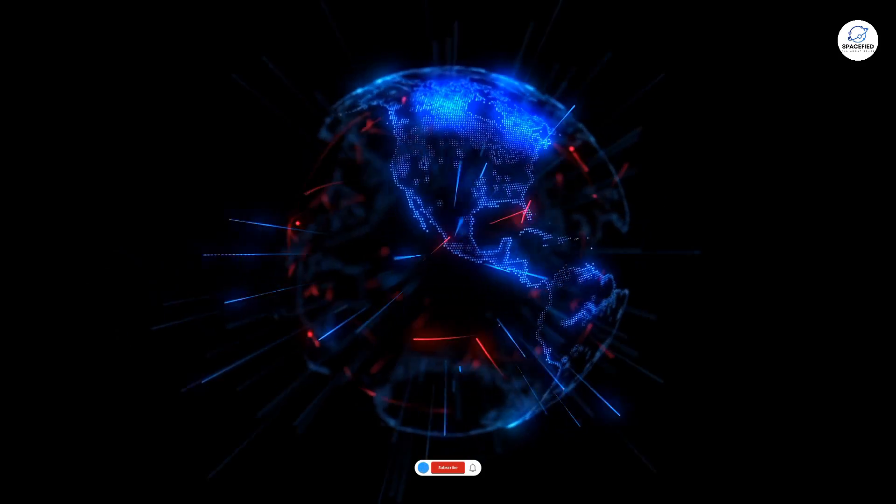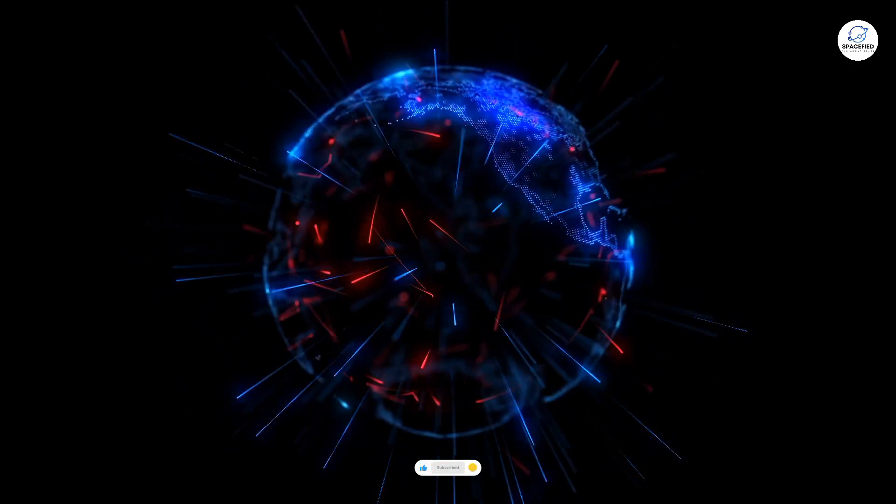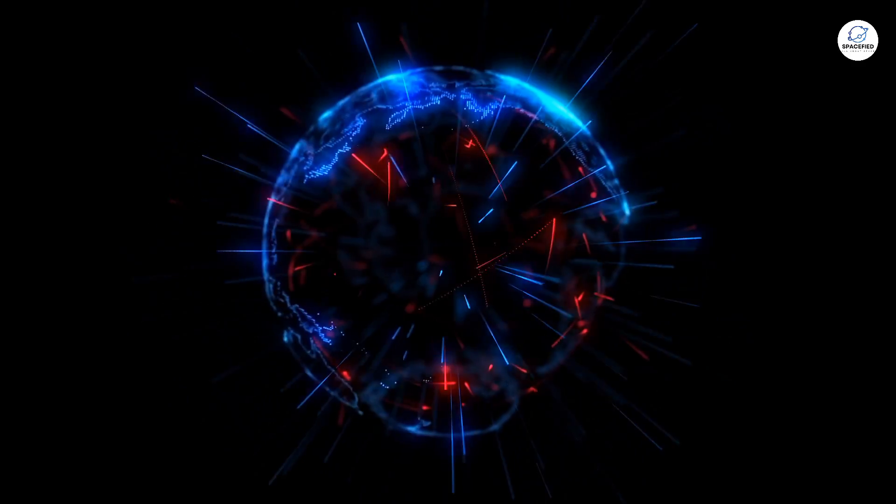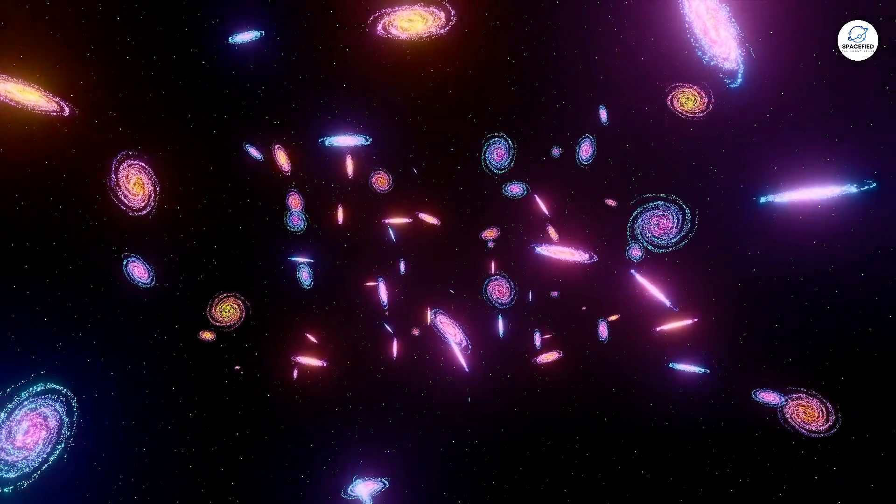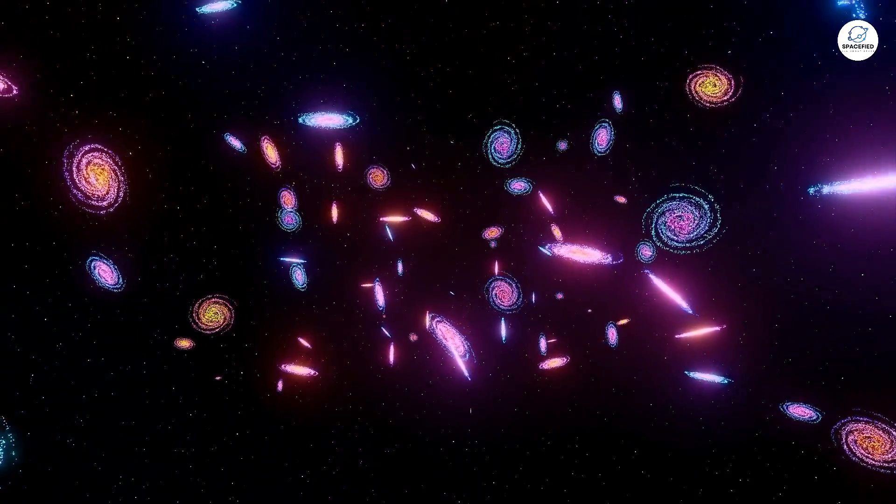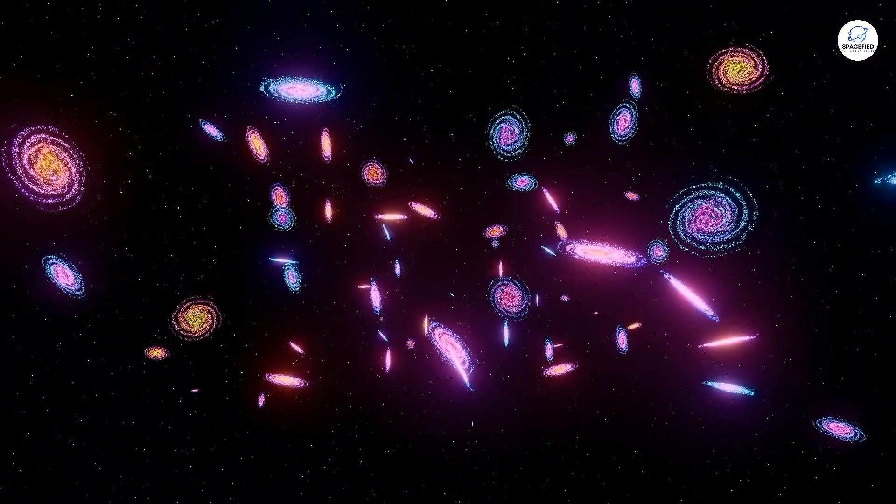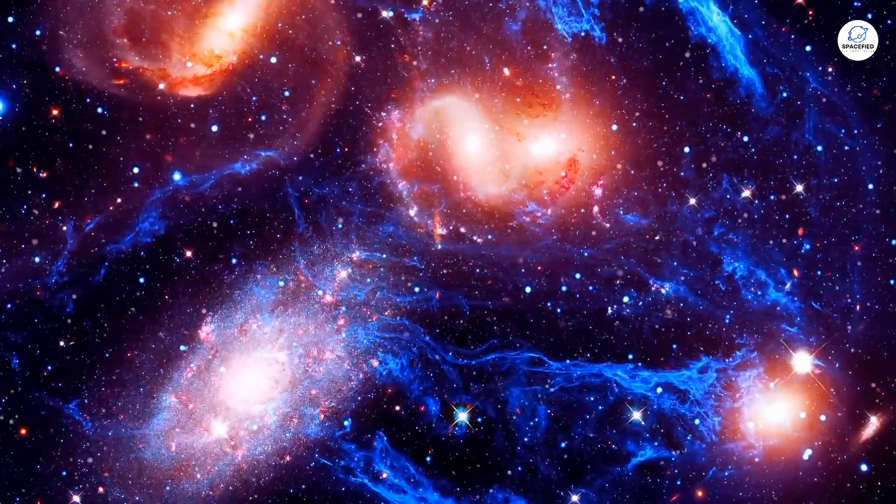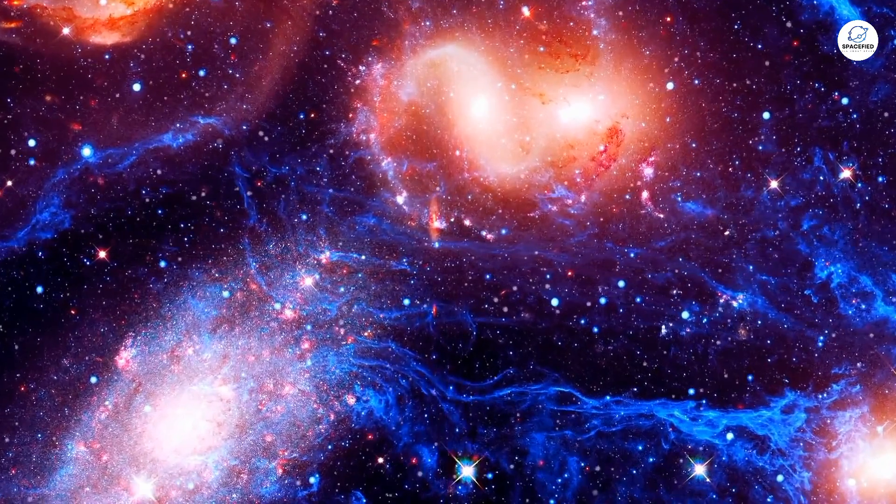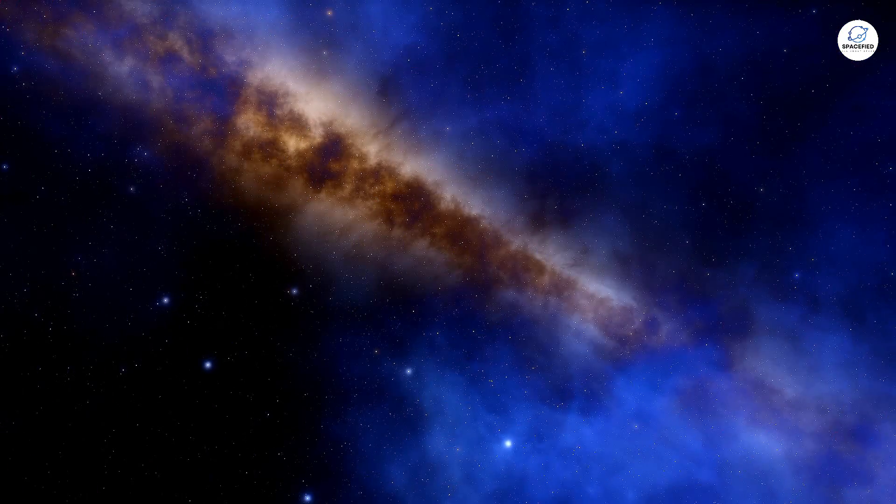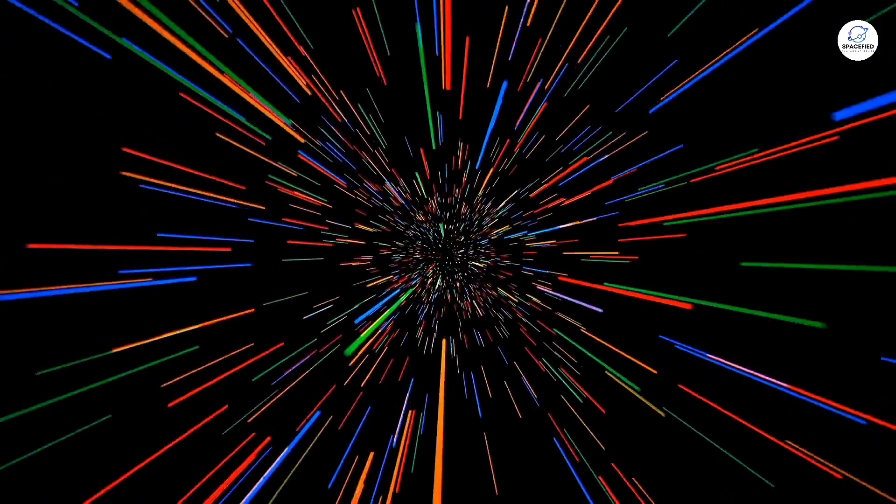The idea that there is more to the universe than what we can see is not just theoretical, but has been hinted at through phenomena such as dark flow. In 2008, scientists studying the motion of galaxy clusters noticed an anomaly. These clusters, which are among the largest structures in the universe, seem to be moving in a coordinated way toward a specific region of the sky at extraordinarily high speeds.